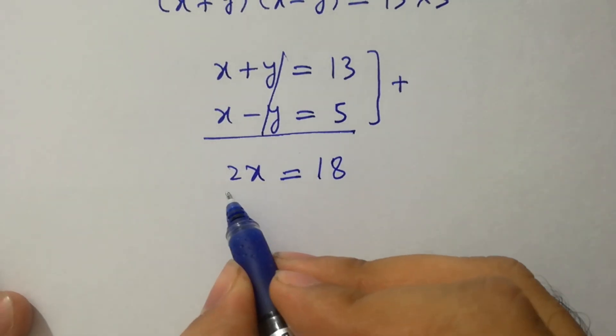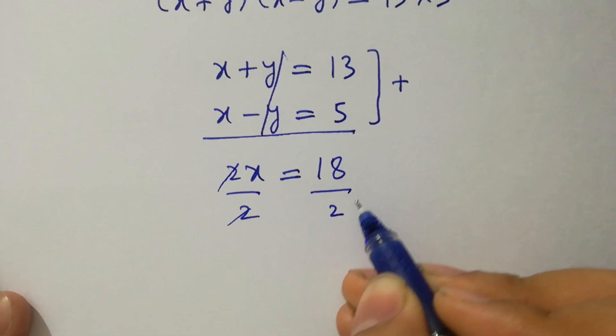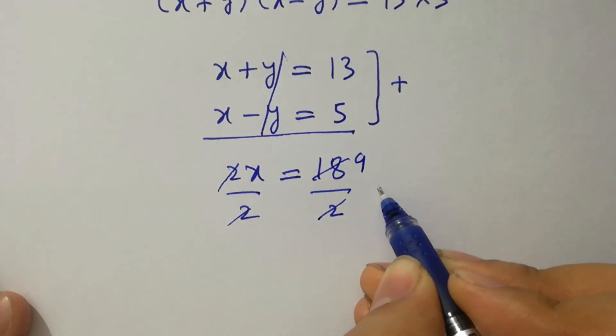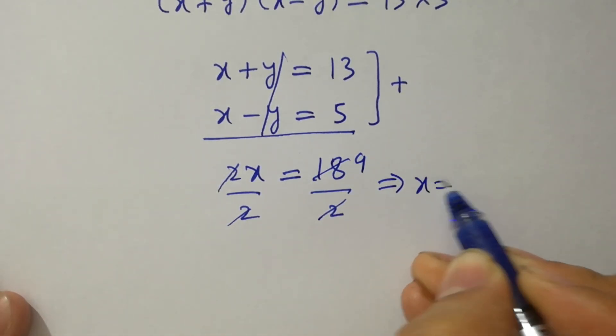To find x, divide by 2 on both sides, 2 cancels, 2 times 9 is 18, so x equal to 9.